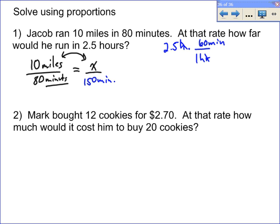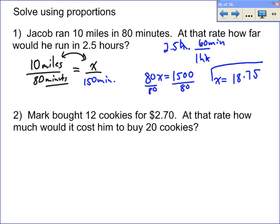We just do the cross products: 80 times x equals 10 times 150, which is 1,500. Then divide both sides by 80, and x equals 1,500 divided by 80, which equals 18.75. So at a rate of 10 miles in 80 minutes, Jacob can travel 18.75 miles in 2.5 hours.